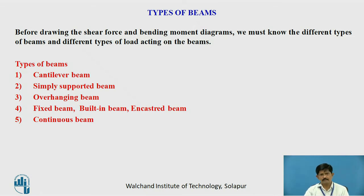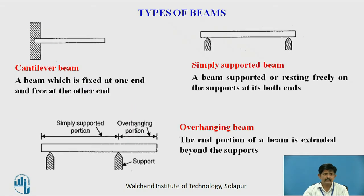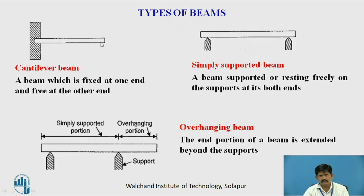There are many types of beams: mainly cantilever beam, simply supported beam, overhanging beam, fixed beam or built-in beam or encasted beam, and lastly the continuous beam. A cantilever beam is a beam which is fixed at one end and free at the other end, as this figure shows.